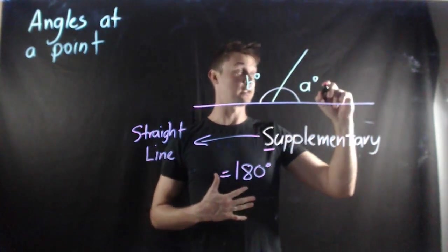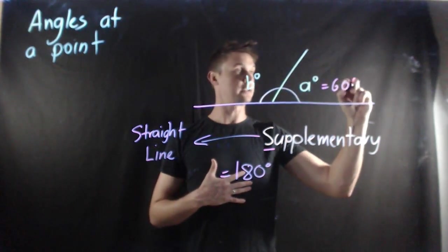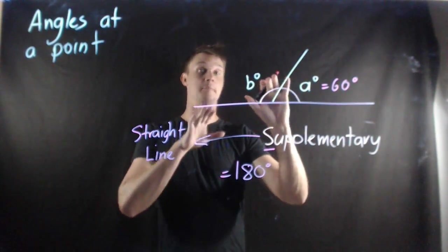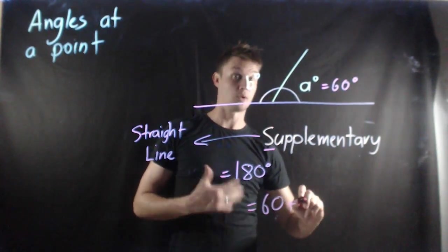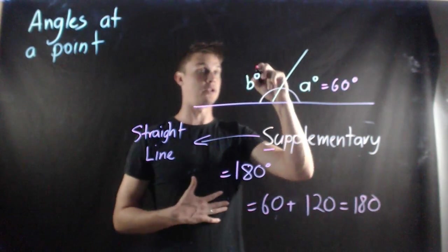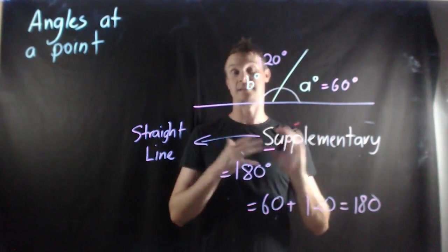So again if we just do an example here, let's just say angle A here equals 60 degrees. I know that this must be a supplementary angle. B then must be 120 because 60 plus 120 will give me 180. So I know that this is 120 because angle A and B are supplementary.